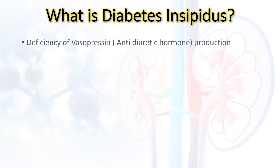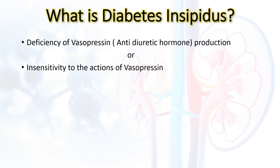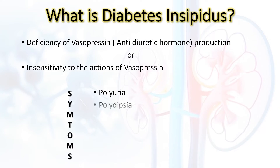Diabetes insipidus is caused by either a deficiency of vasopressin or insensitivity to its actions. There is a problem with water reabsorption in the kidney, which may result in loss of water from the body. The patient will dehydrate and drink more and more water. Symptoms include polyuria, extreme thirst (polydipsia), and nocturia — waking frequently through the night to urinate.